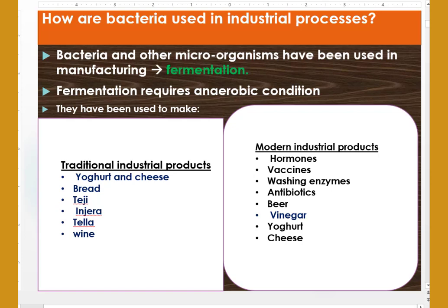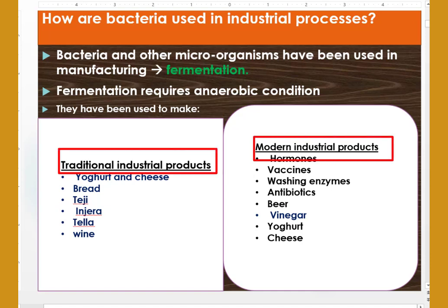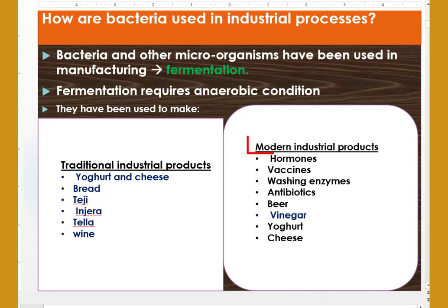These microorganisms have been used to make certain industrial products in traditional and modern industrial processes. In traditional industrial processes, they get applied to produce yogurt, cheese, bread, taj, injera, talla, araki, wine, and so on.